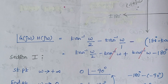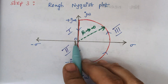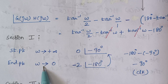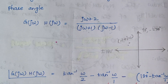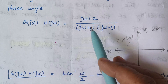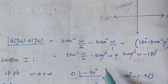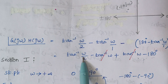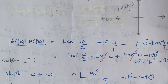Now we analyze Section 1, where ω starts at plus infinity and ends at 0. At the starting point ω is plus infinity: anything divided by infinity is 0, so the magnitude is 0. Substituting ω as infinity in the phase expression, tan inverse of infinity gives 90 degrees, so 90 minus 180 degrees gives minus 90 degrees — this is the phase value.